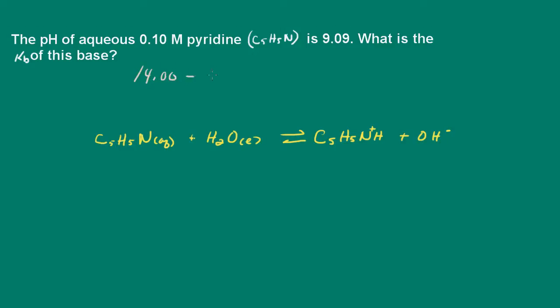So we have 14 minus 9.09, and this is going to give us the pOH. And what we end up with is 4.91.